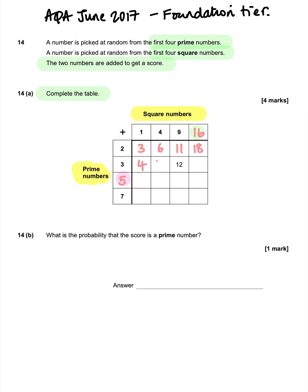3 plus 1 is 4, 3 plus 4 is 7, 3 plus 16 is 19, 5 plus 1 is 6, 5 plus 4 is 9, 5 plus 9 is 14.